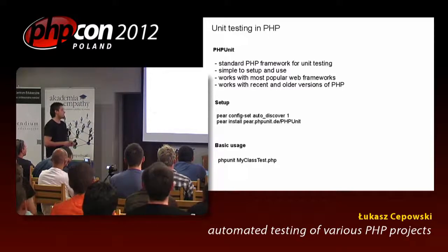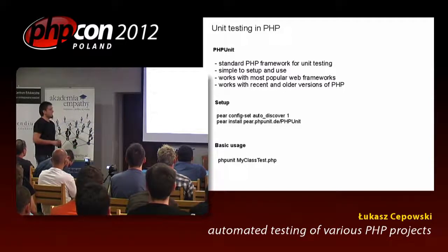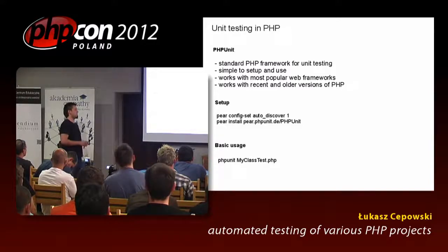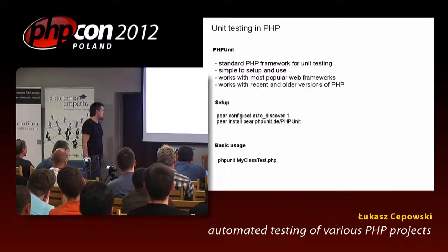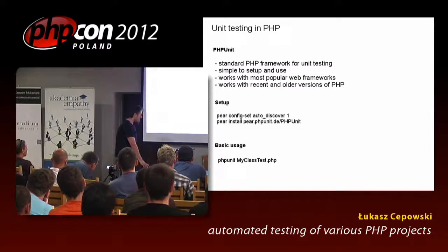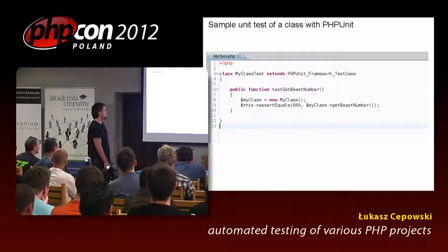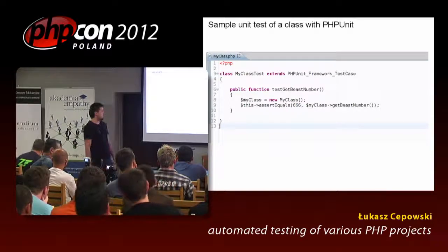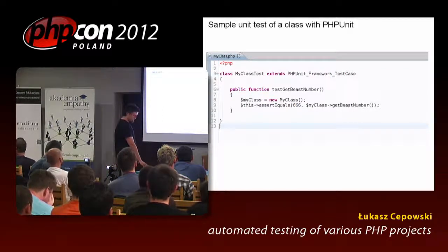This is how to set up PHPUnit — just a copy of the manual. To run PHPUnit on a single class, you type PHPUnit with the class name. Here is a very simple example of a unit test of a single class: it creates an instance of a class and asserts if the value is correct. You can extend this to almost anything.